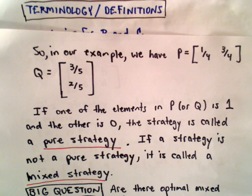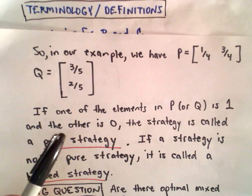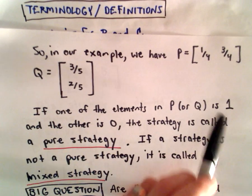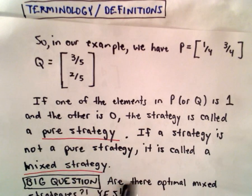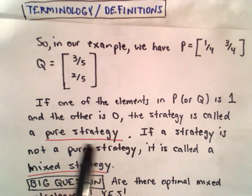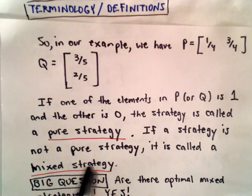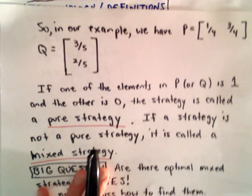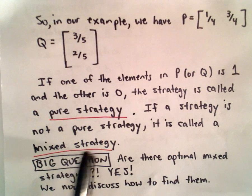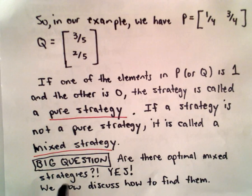Just a little other terminology. If one of the elements is a one and the other is a zero, this is what's known as a pure strategy, because you're always going to pick either that row or that column. If it's not a pure strategy, it's what's known as a mixed strategy. And that's what we're going to be focusing on, finding that mixed strategy.